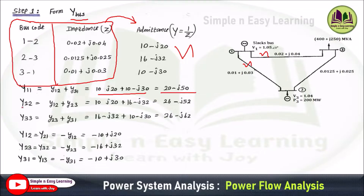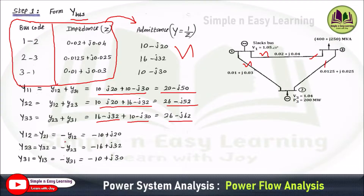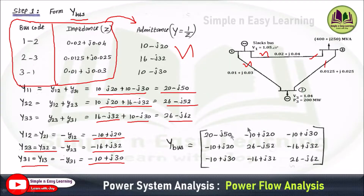For Y22, the lines connected to bus 2 are lines 1-2 and 2-3. Adding these gives 26 minus J52. Similarly for the third bus, lines 2-3 and 3-1 give the corresponding diagonal element. For the off-diagonal elements, Y12 equals Y21, which equals the negative of the admittance of the line between the two buses: minus 10 plus J20. Y23 equals Y32 equals minus 16 plus J32. Y31 and Y13 equal minus 10 plus J30. All these parameters are represented in a 3×3 matrix since it is a 3-bus system.